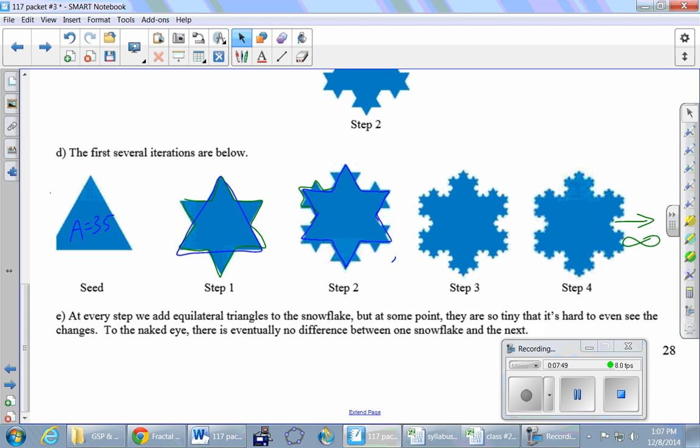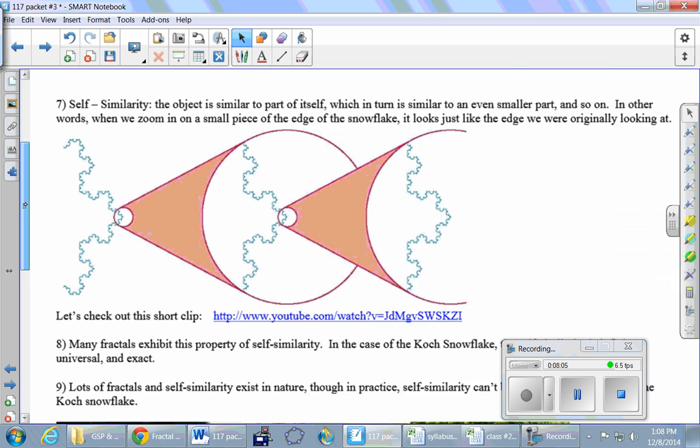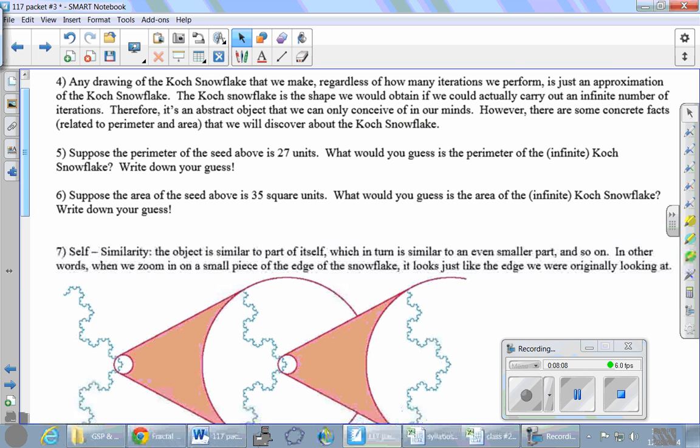Let's just get some guesses. What did we think about the perimeter? Just shout some numbers out loud. 270,000 for the perimeter. Other numbers? 81. Other numbers? 61. Anybody have anything bigger than 270,000? 5 billion. No fooling around. 54. We have a pretty wide range of guesses for the perimeter.